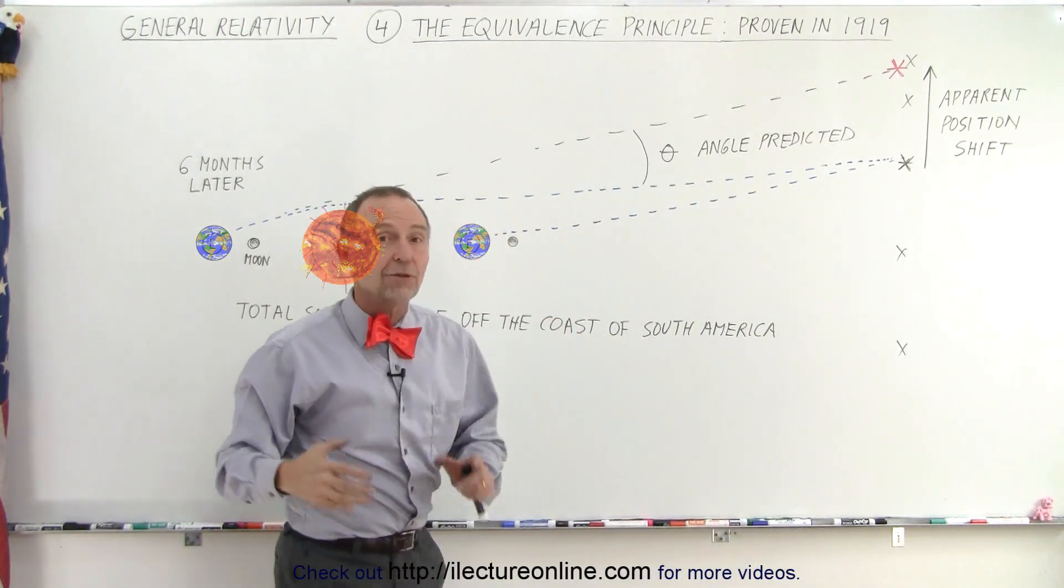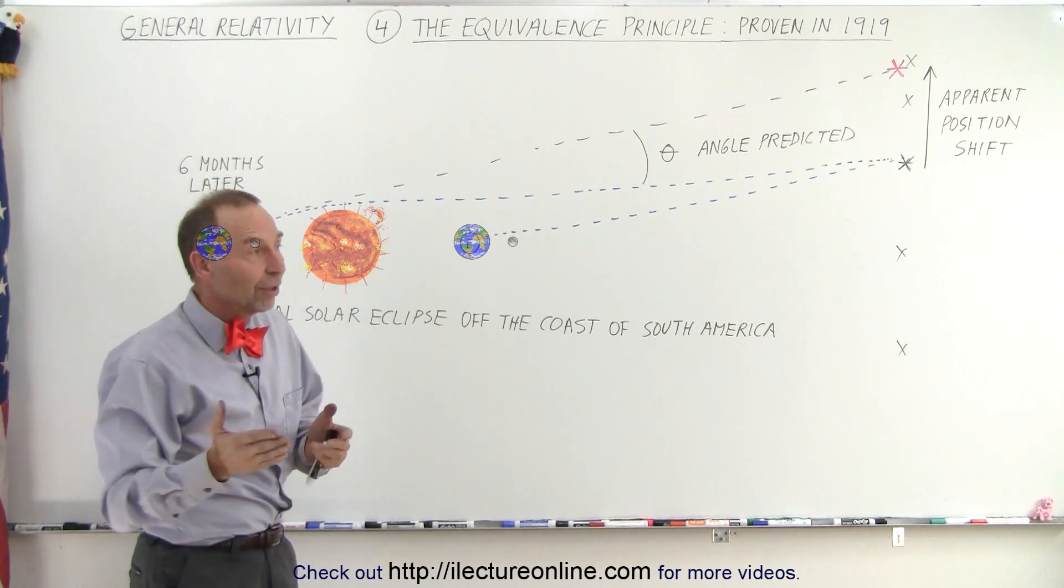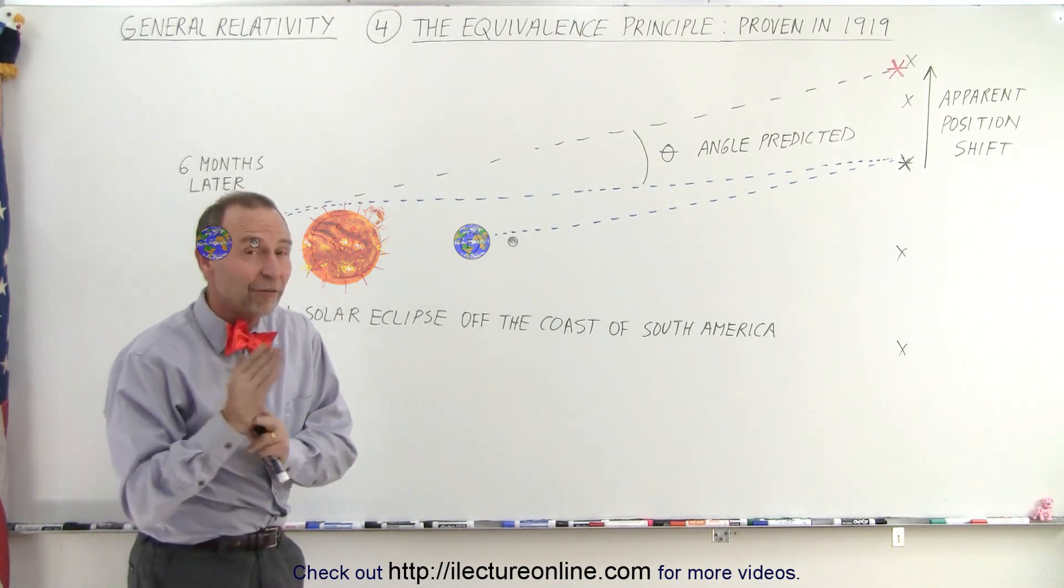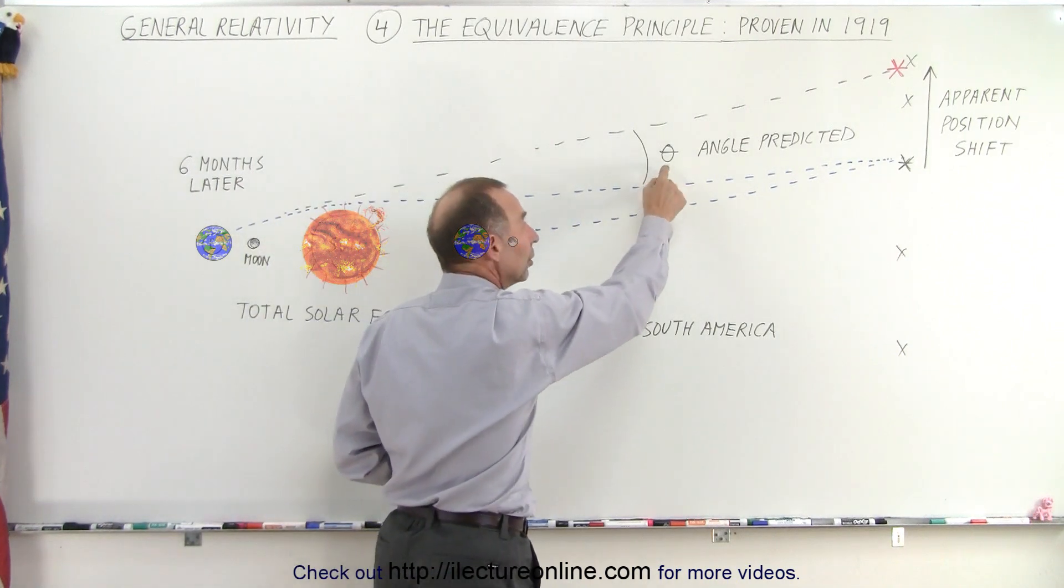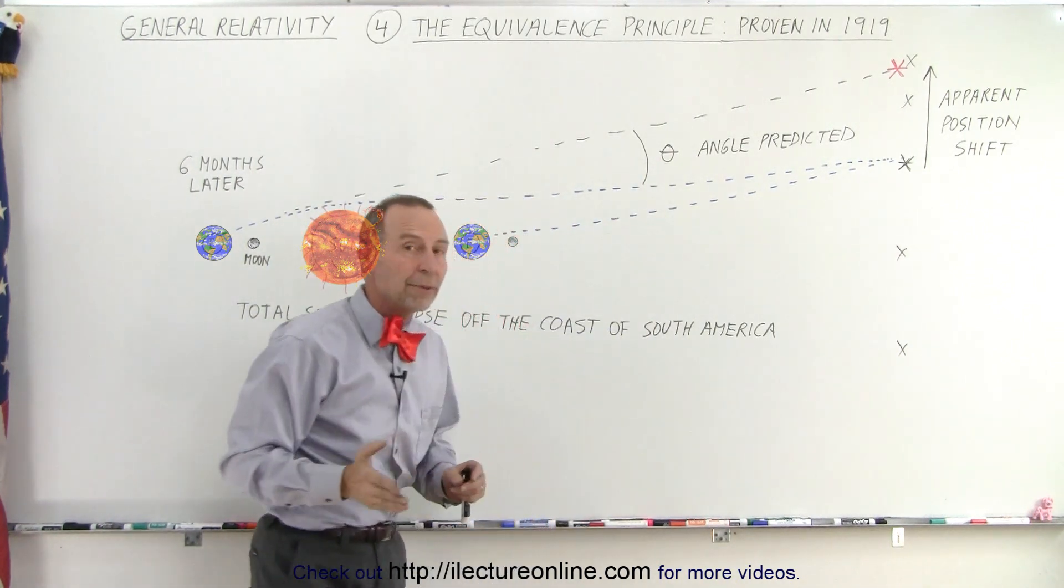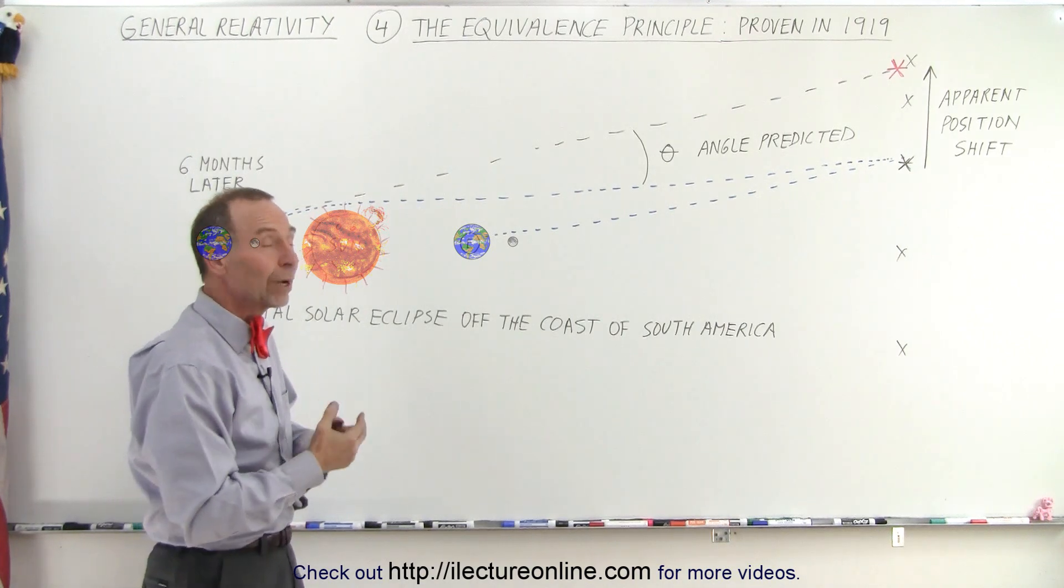And sure enough, when they took the picture, they developed it, and they looked at it, they saw that he was correct. The star was now in a different location. Not only that, he had predicted the angle at which the star would now appear relative to the previous location. And sure enough, he was correct again.